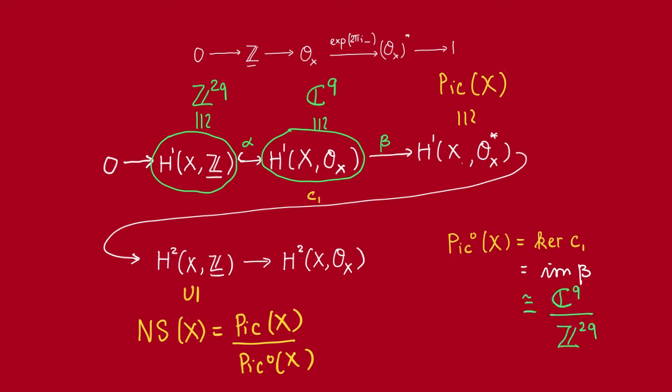So we see that Pic⁰ is isomorphic to this, which is a complex torus, a q-dimensional complex torus. So we see why it should have a group scheme structure. Alright, so that's Pic⁰.